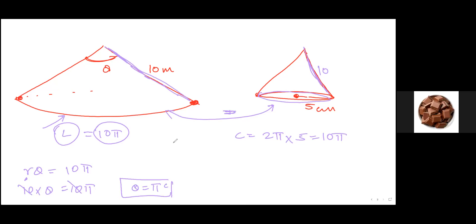Just to summarize: the slant length of the cone is the same as the radius of the sector, and the arc length becomes the circumference of the base. This is what we need to know about area of a sector and the cone formation.